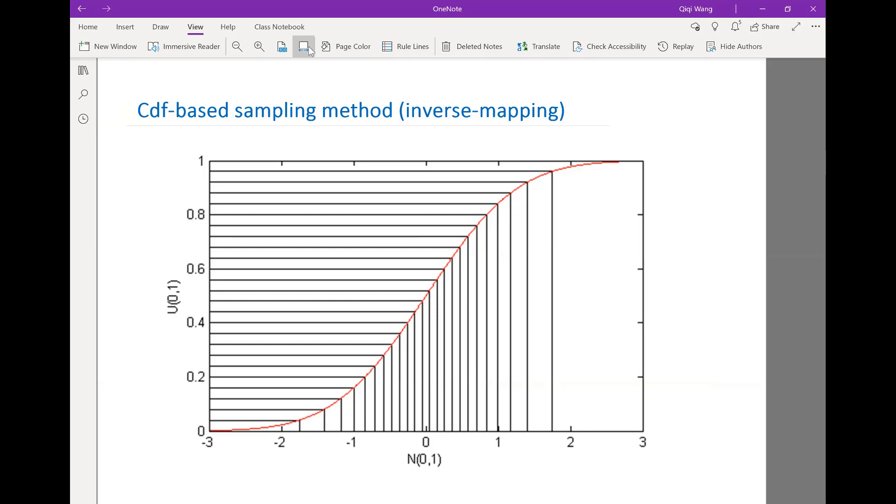Then when you map it back to the x-axis, you're going to see that whenever the CDF is flatter, flatter means having a smaller derivative, which means the PDF is smaller. The slope of the CDF is the PDF, so wherever the slope of the CDF is small at the lower PDF, the same number of samples that you get from the same interval in y is mapping to a bigger interval in the x-axis.